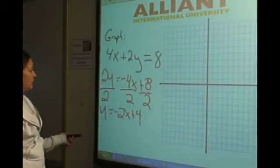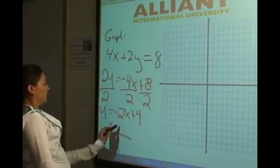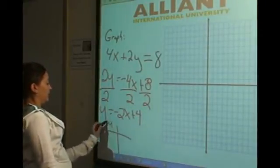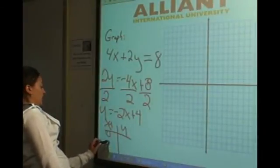And now we are going to make ourselves a little table down here. Let's pick easy numbers, 0 and 1.